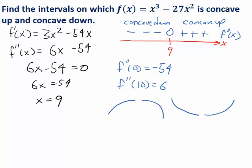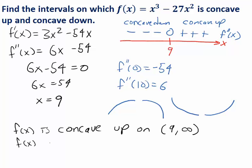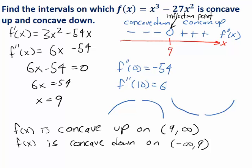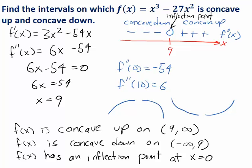So let's summarize. f(x) is concave up on the interval from 9 to infinity. f(x) is concave down on the interval from negative infinity to 9. And although the question didn't ask for this, one more useful piece of terminology: the point where a function changes from concave up to concave down or vice versa is called an inflection point. So we can say that f(x) has an inflection point at x equals 9.